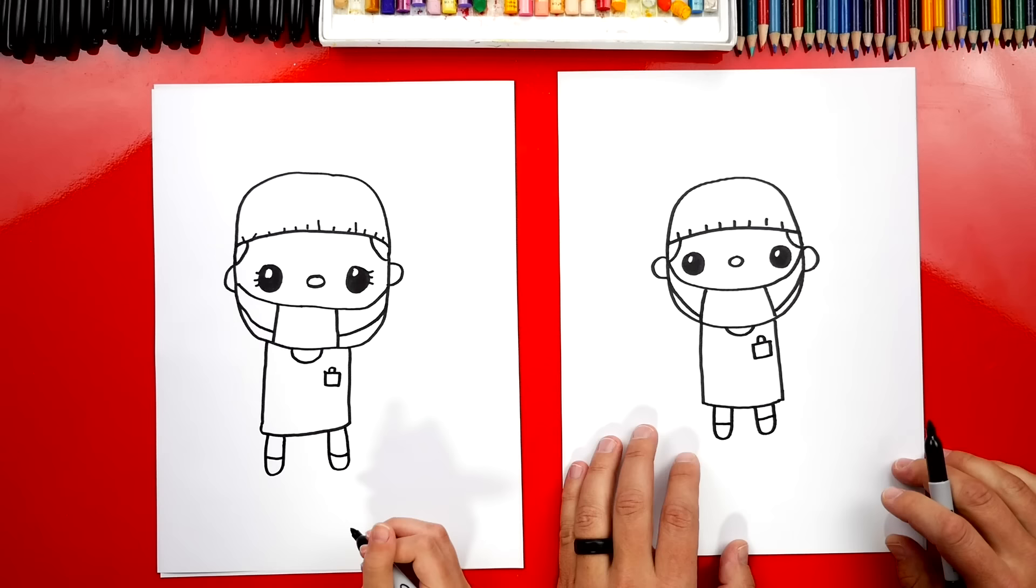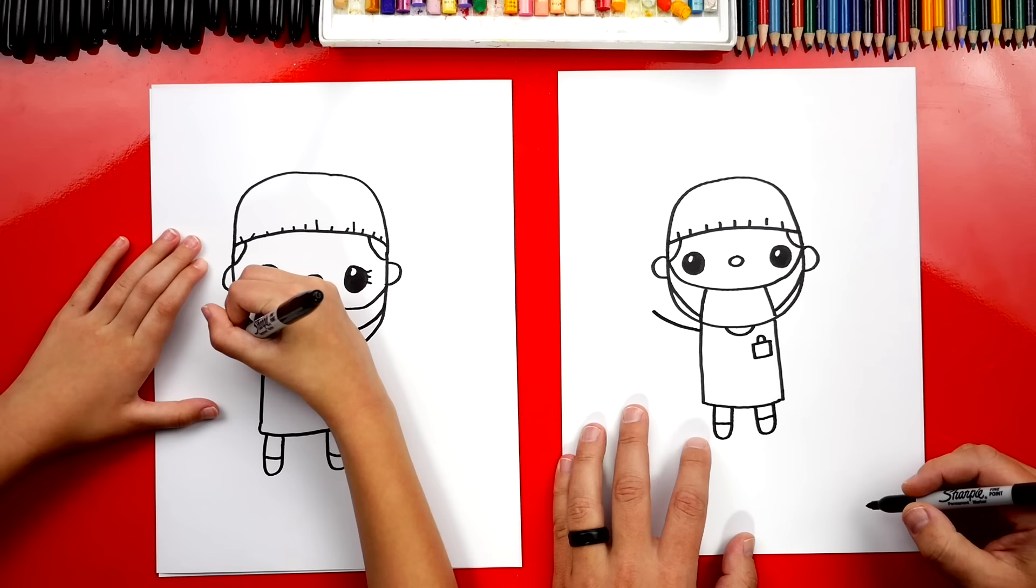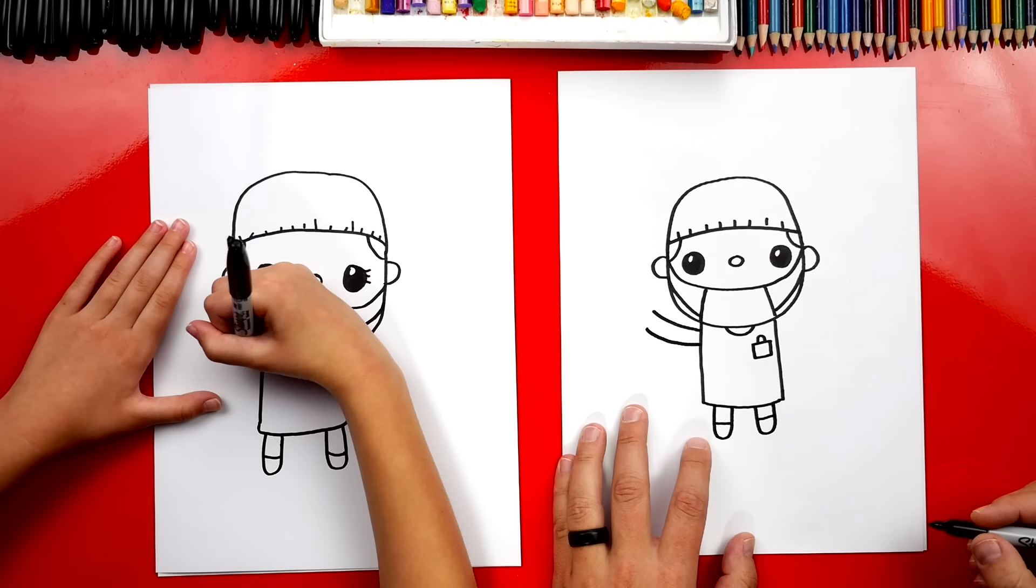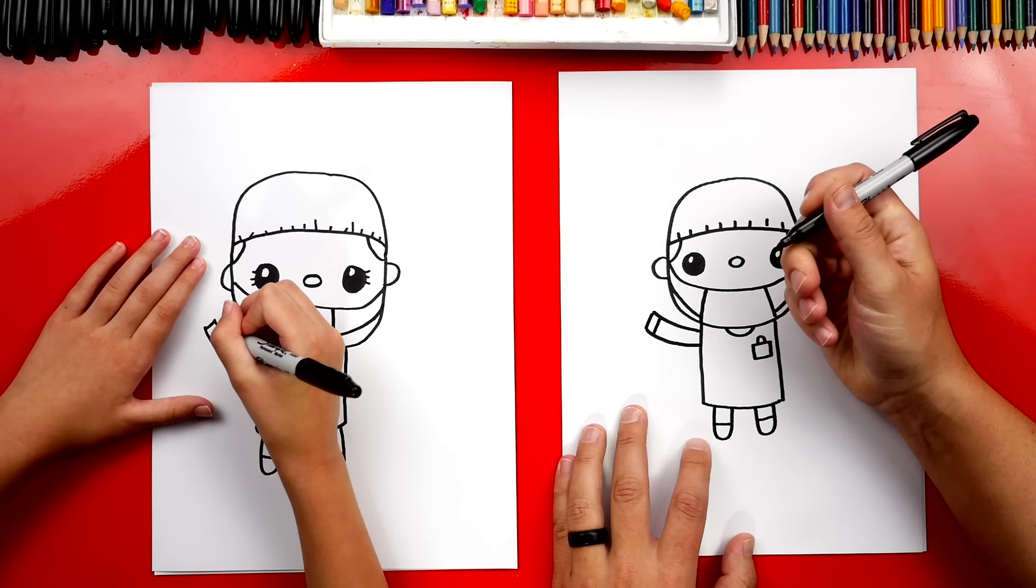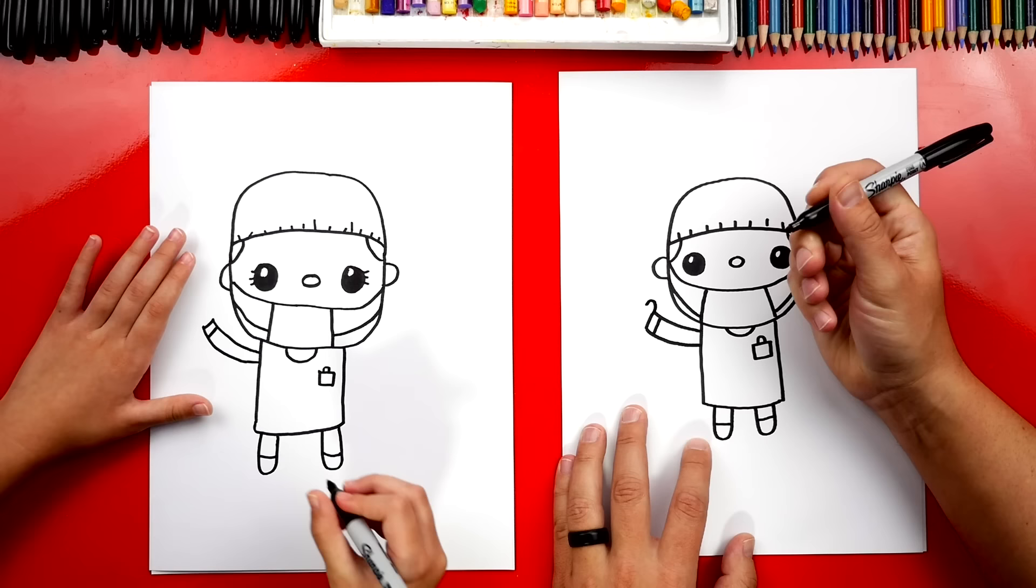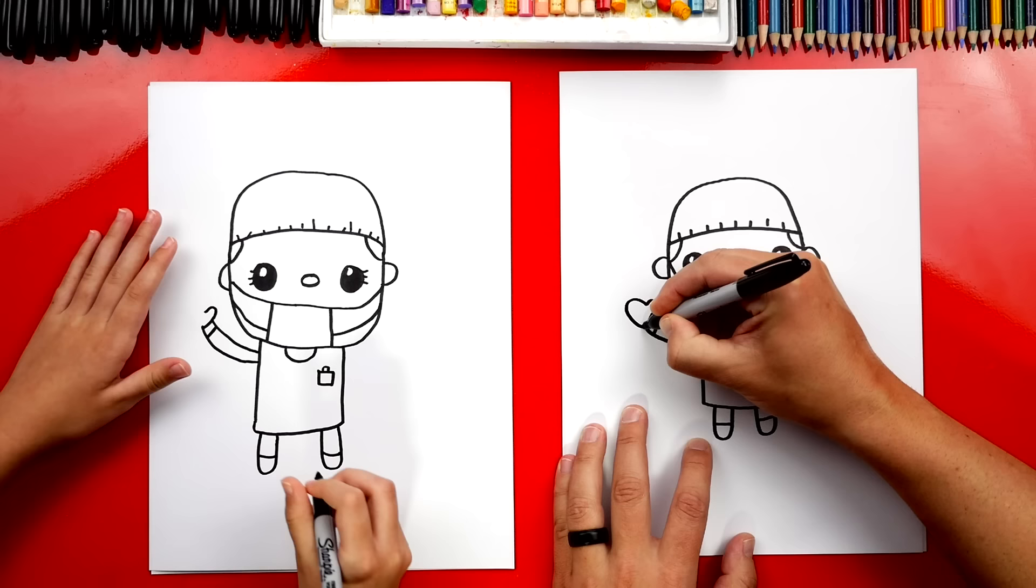Now let's draw them waving to us. And we're gonna draw a curve coming up. And I'm gonna draw another curve right next to that one. And then we can connect their sleeve. And let's draw another line right next to it. Okay, now let's draw their hand. We're gonna draw a simple hand. We'll draw an upside down small U for the thumb. And then we'll draw a big sideways U for the rest of their hand.